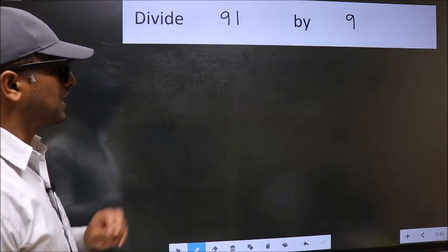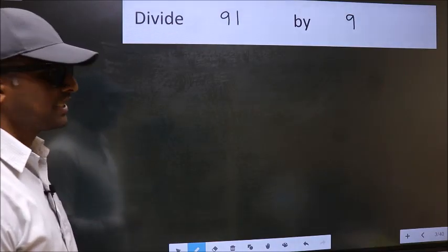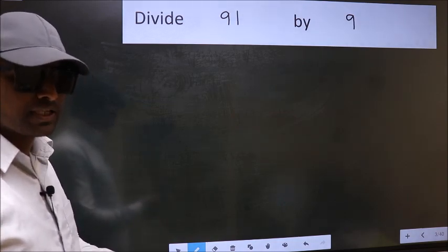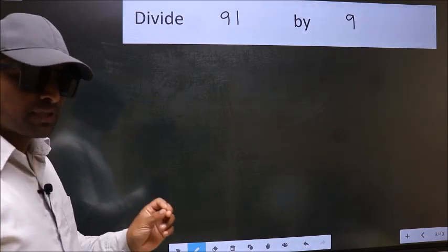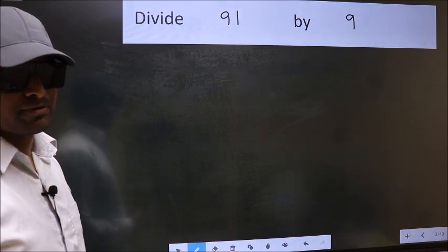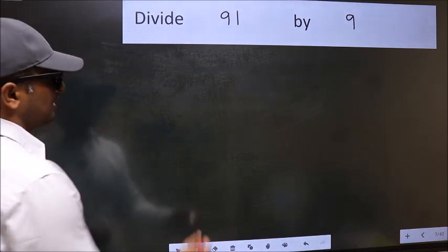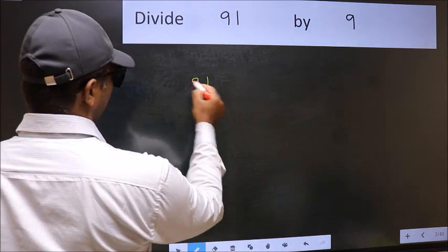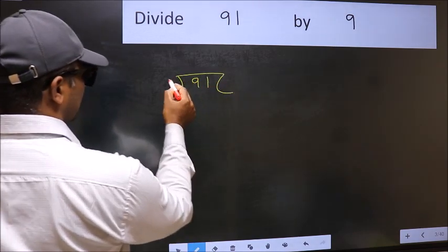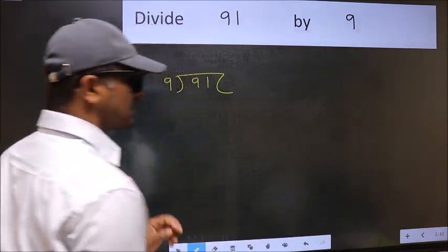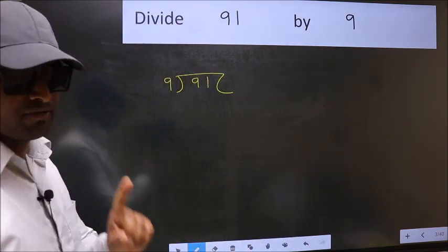Divide 91 by 9. While doing this division, many do this mistake. What is the mistake that they do? I will let you know. But before that, we should frame it in this way. 91 and 9 here. This is your step 1.